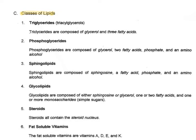The six classes of lipids are: triglycerides, phosphoglycerides, sphingolipids, glycolipids, steroids, and fat-soluble vitamins. Triglycerides are made up of glycerol and three fatty acids. Phosphoglycerides have glycerol, two fatty acids, a phosphate, and an amino alcohol. Sphingolipids have sphingosine, a fatty acid, a phosphate group, and an amino alcohol. You'll need to know what all the parts are for each of these classes.